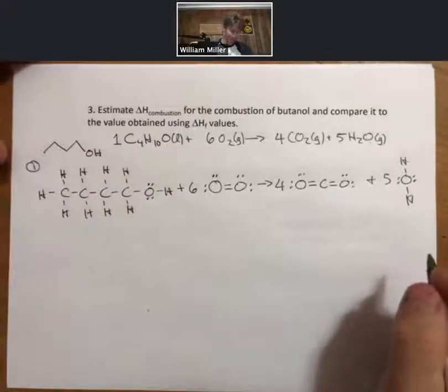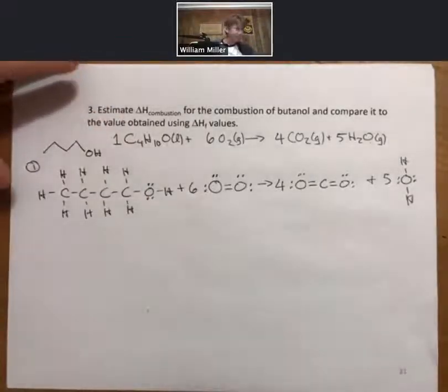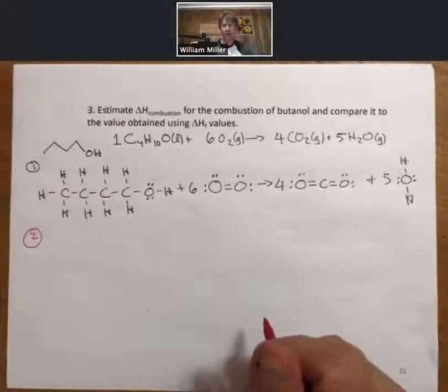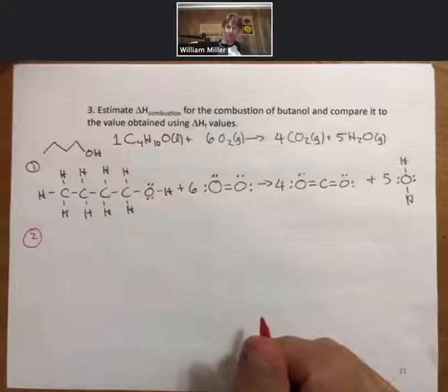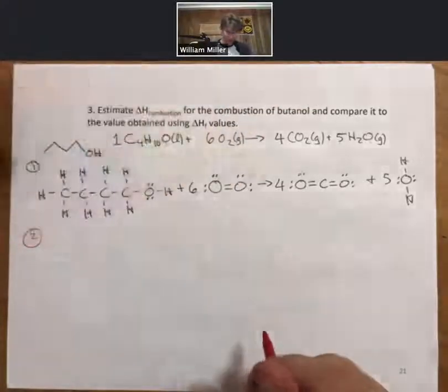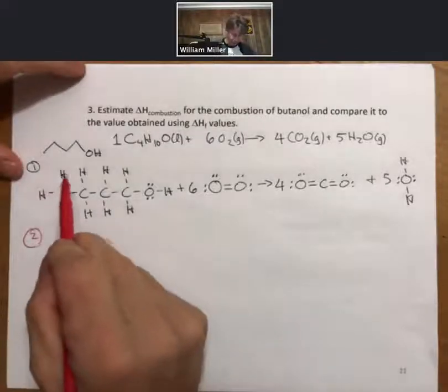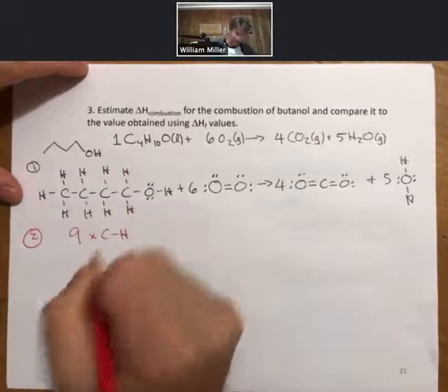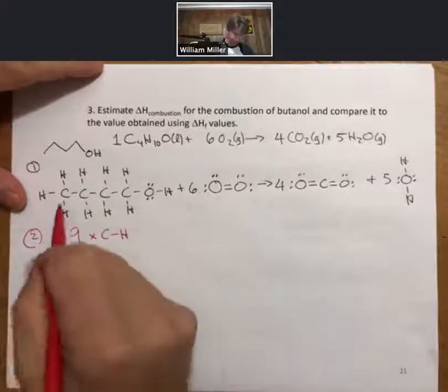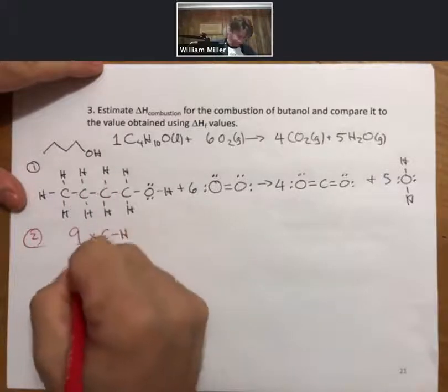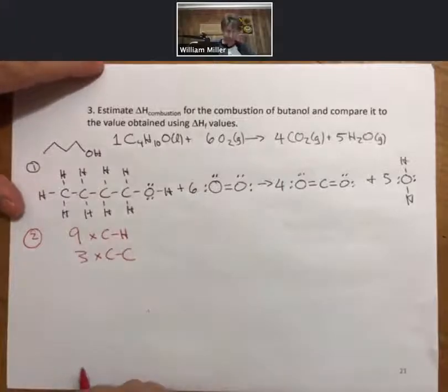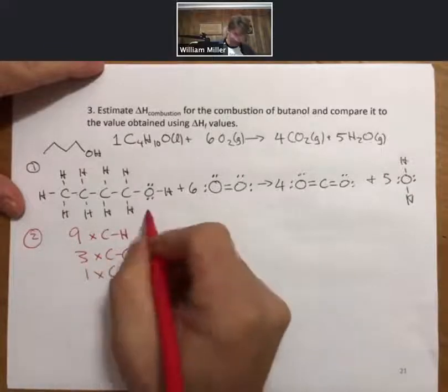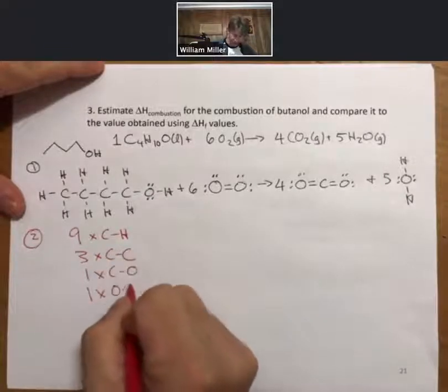My next step is to find the bond dissociation energies. What I'm going to do is add a slight wrinkle here—I'm going to total up my bonds first. First, I have one, two, three, four, five, six, seven, eight, nine carbon-hydrogen single bonds. I have one, two, three carbon-carbon single bonds.